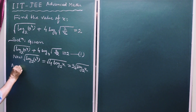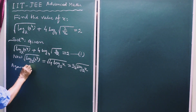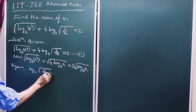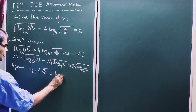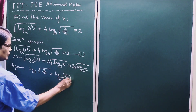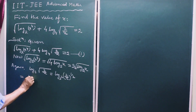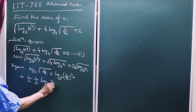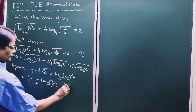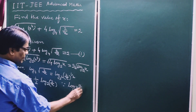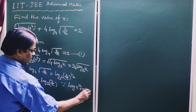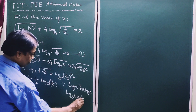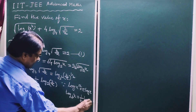Now for the second term, we take log base 4 of the square root of 2 over x. This is equal to log base 2-squared of (2 over x) to the power one-half. This is equal to one-half times one-half times log base 2 of (2 over x), since log x to the power r equals r log x, and log base a-to-the-power-b of x equals one over b times log base a of x.